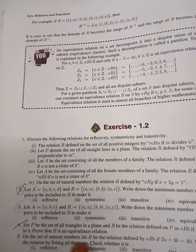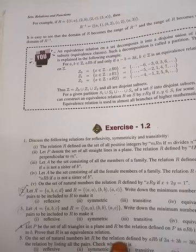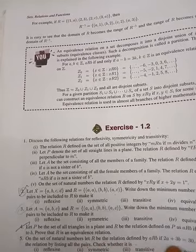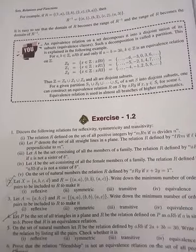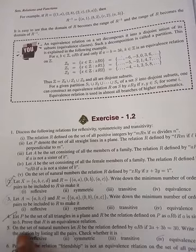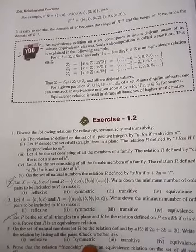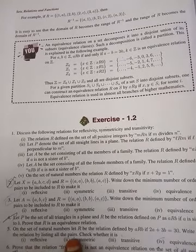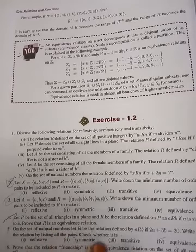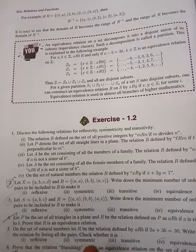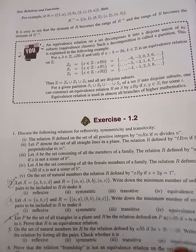On the set of natural numbers, let R be the relation defined by ARB if 2A plus 3B equal to 30. This is the relation. Write down the relation by listing all the pairs. Check whether it is reflexive, symmetric, transitive and equivalence.